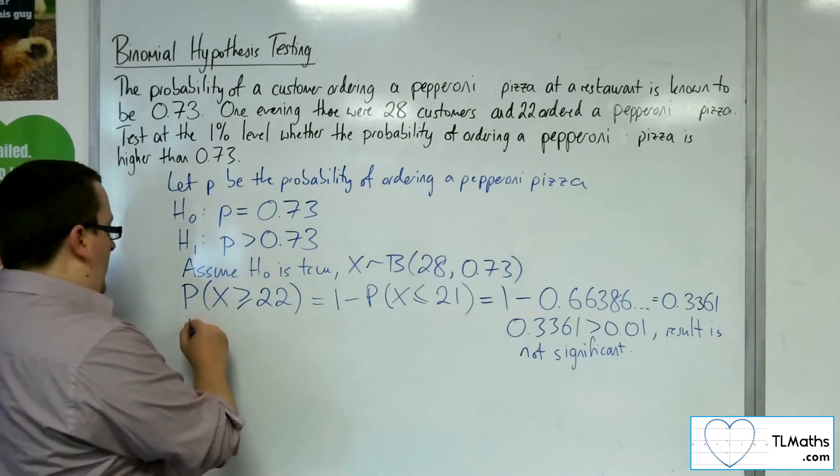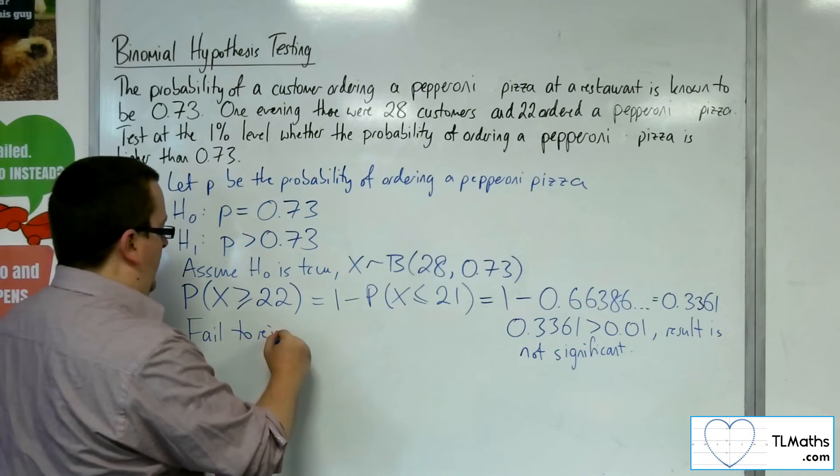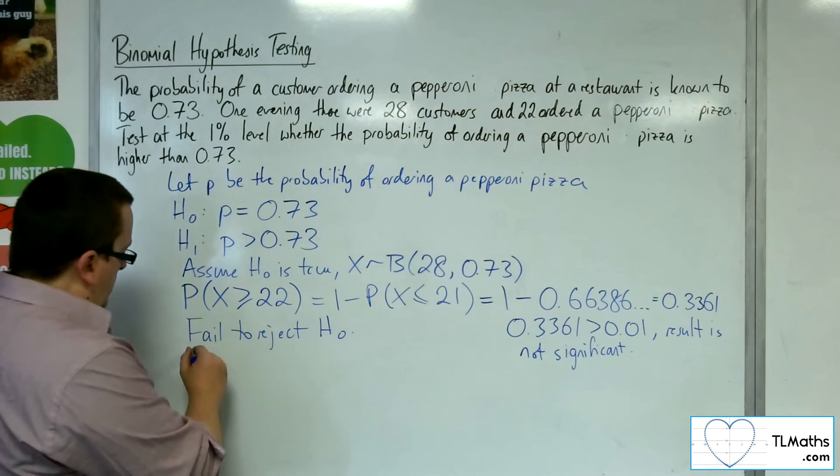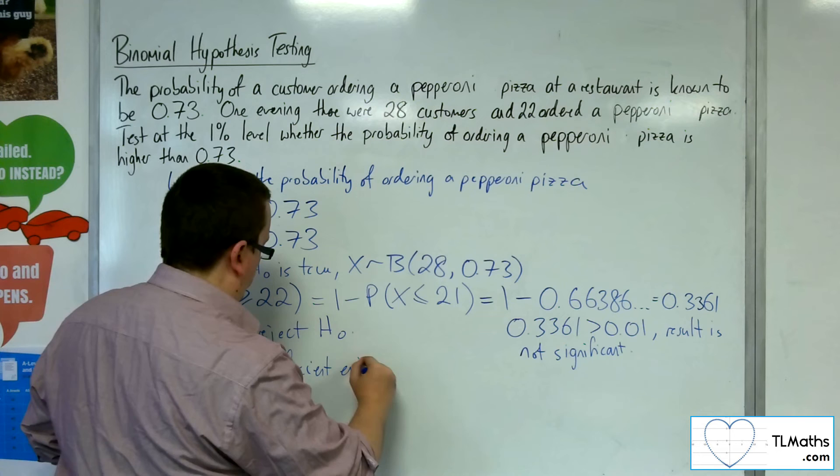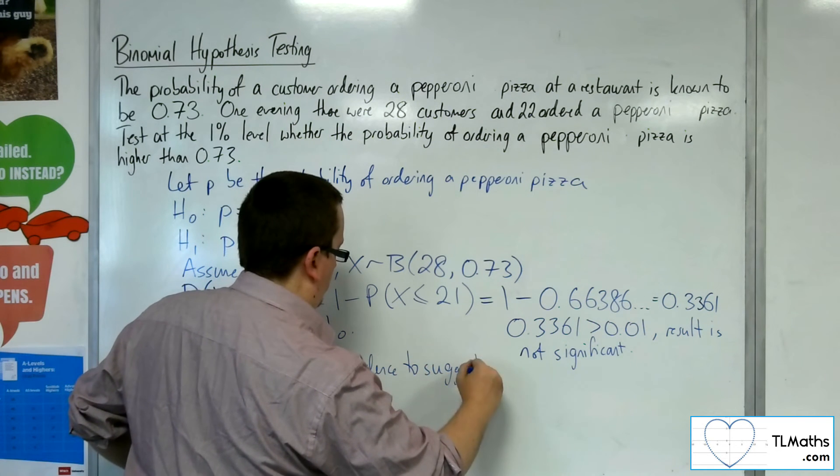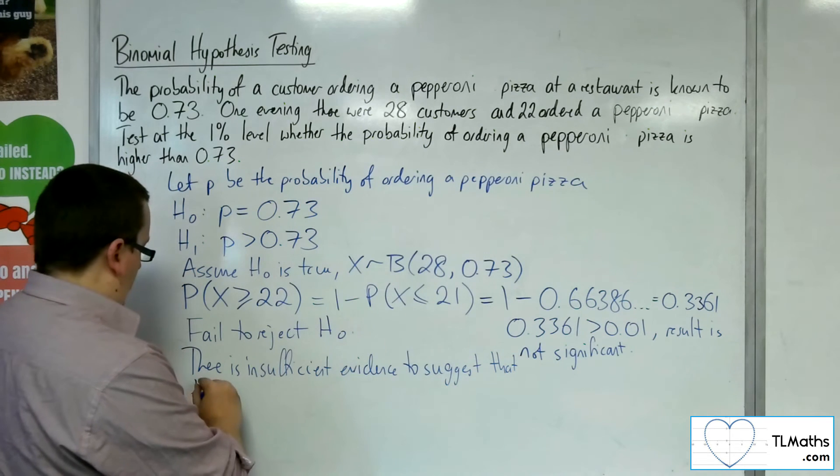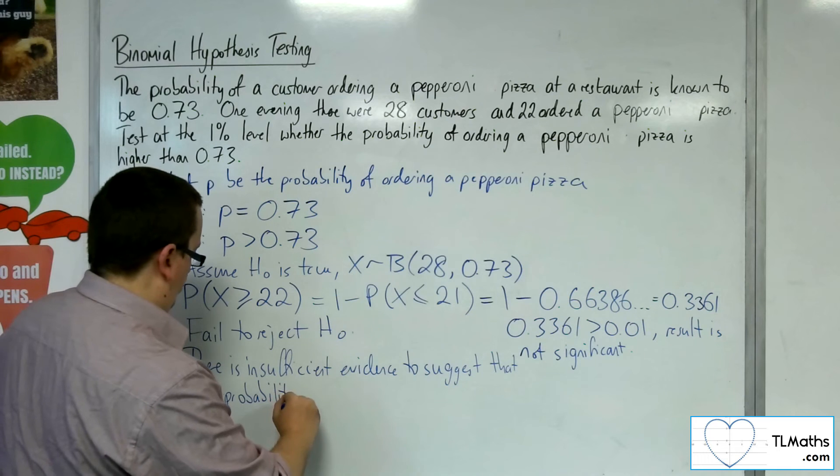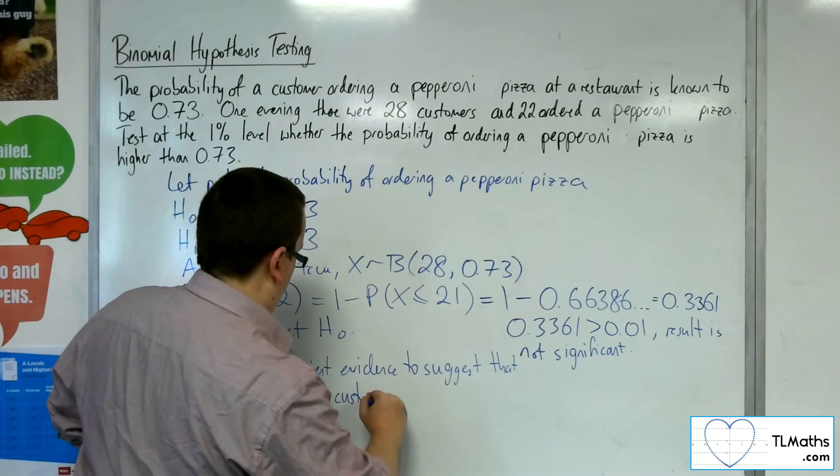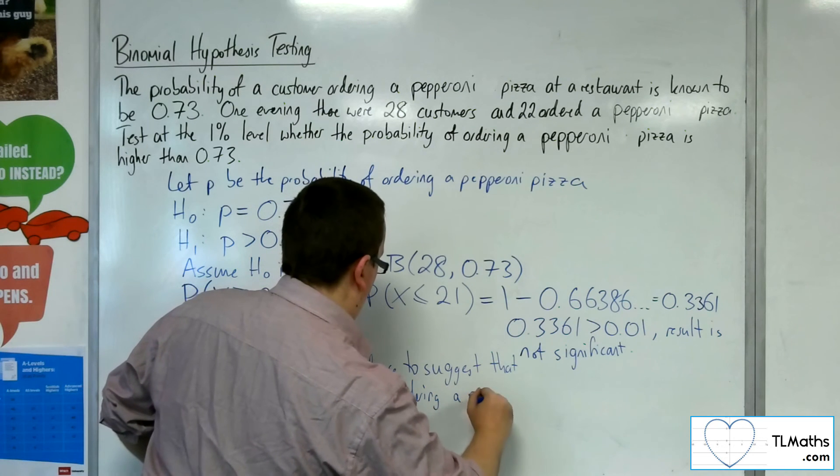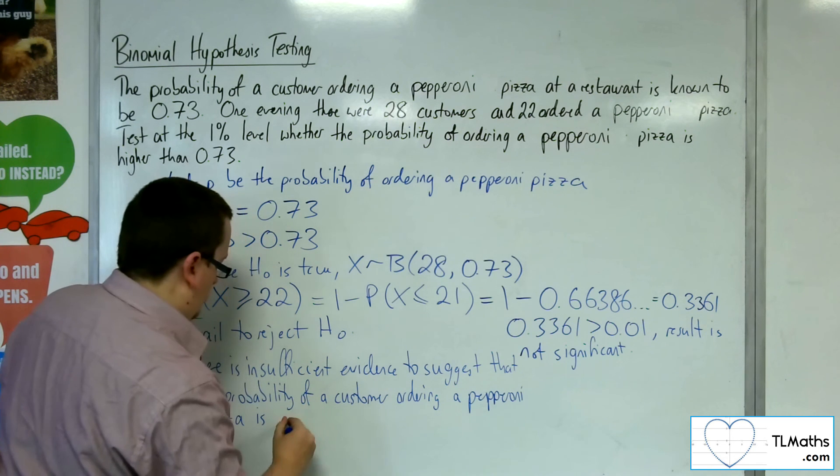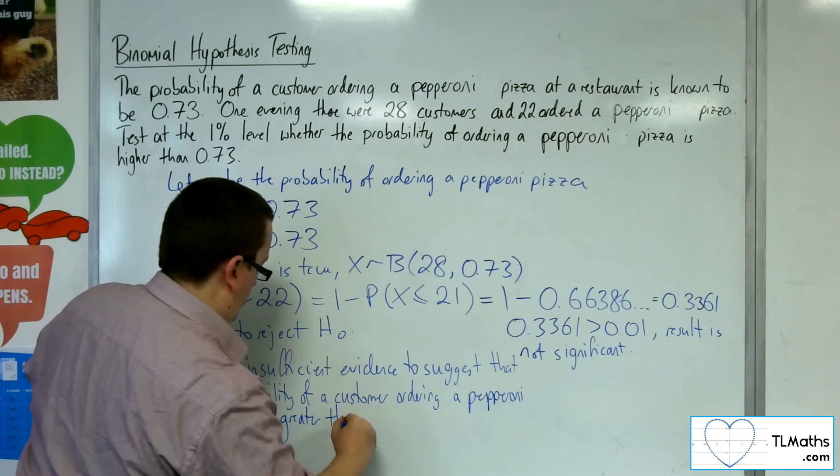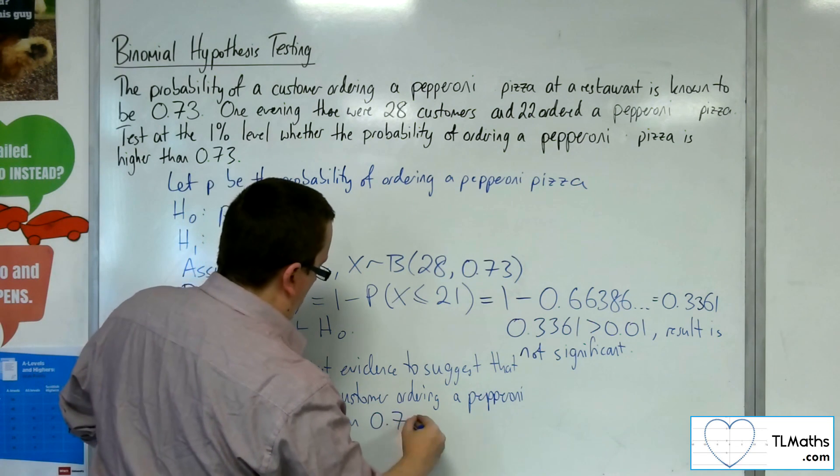We fail to reject H0. There is insufficient evidence to suggest that the probability of a customer ordering a pepperoni pizza is greater than 0.73.